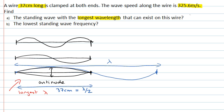So the answer to the longest wavelength that can exist on the string, lambda, will be 2 times 37 centimeters, which is 74 centimeters, or 0.74 meters. So that's our answer to part A of the question.